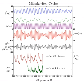Perihelion currently occurs around January 3, so the Earth's greater velocity shortens winter and autumn in the Northern Hemisphere. Summer in the Northern Hemisphere is 4.66 days longer than winter, and spring is 2.9 days longer than autumn.